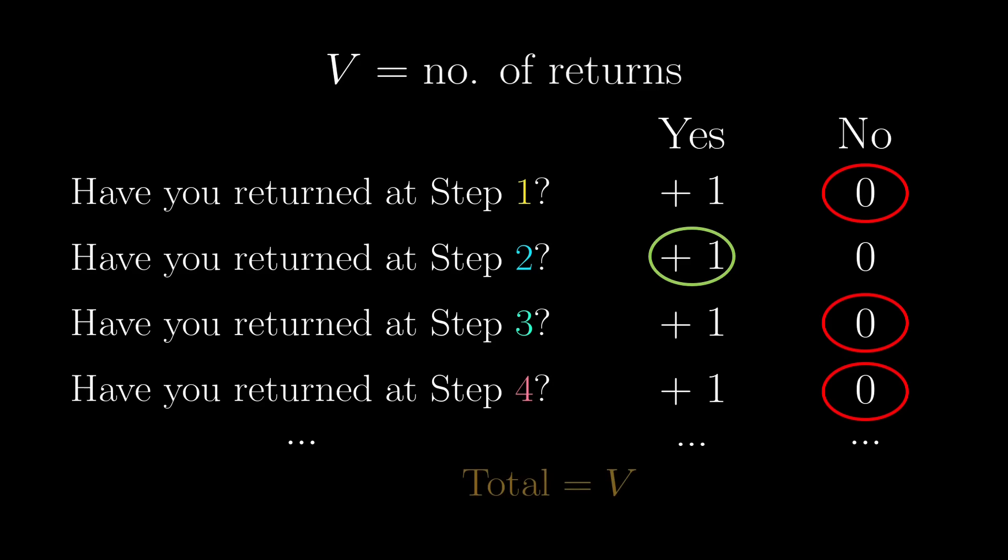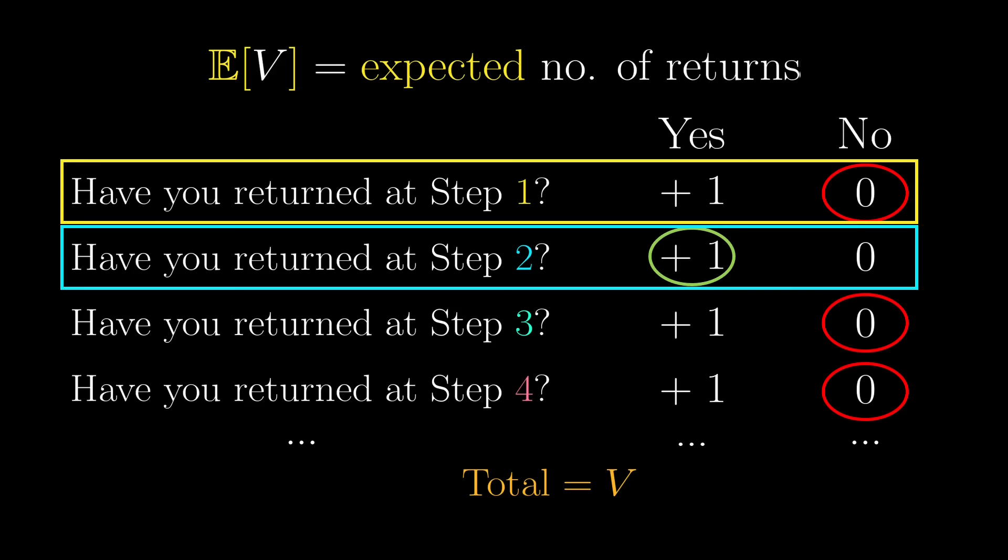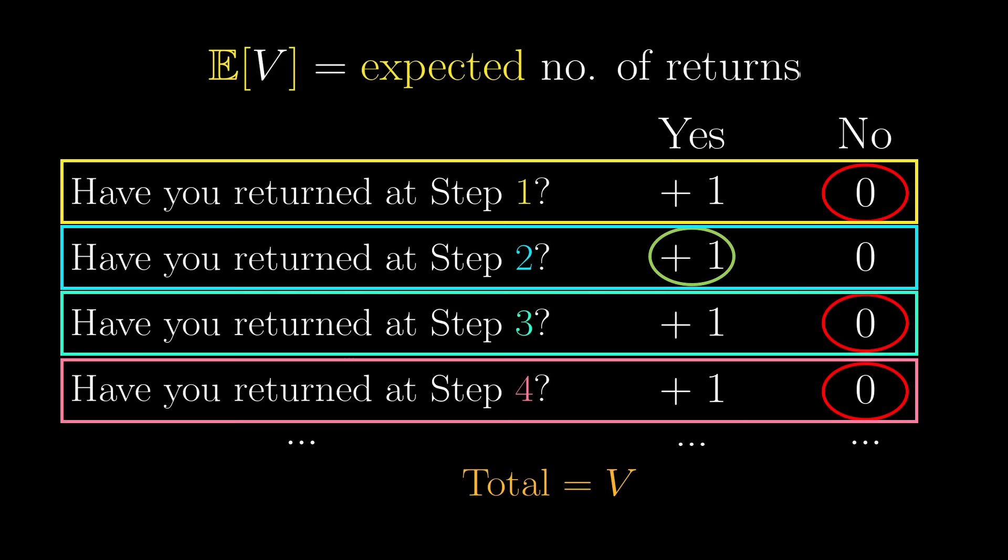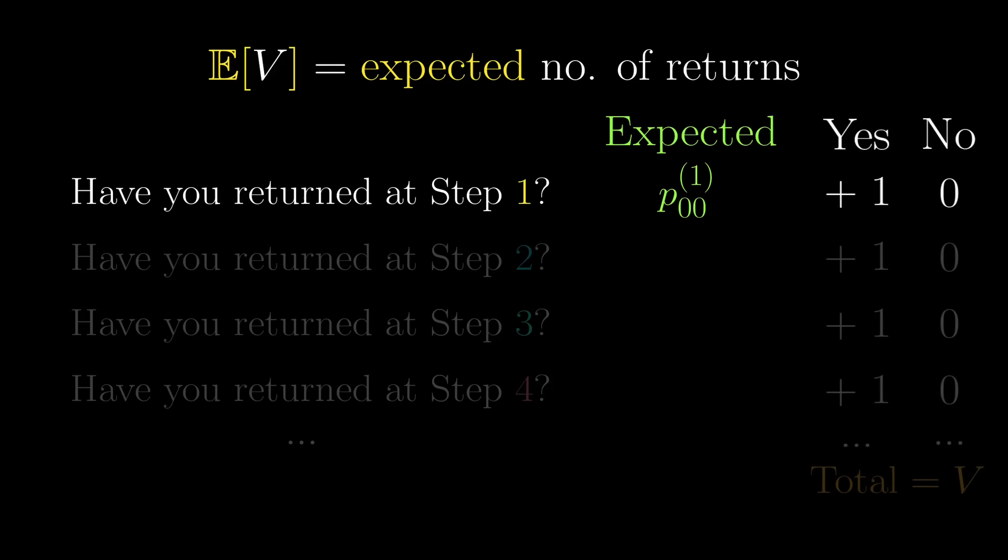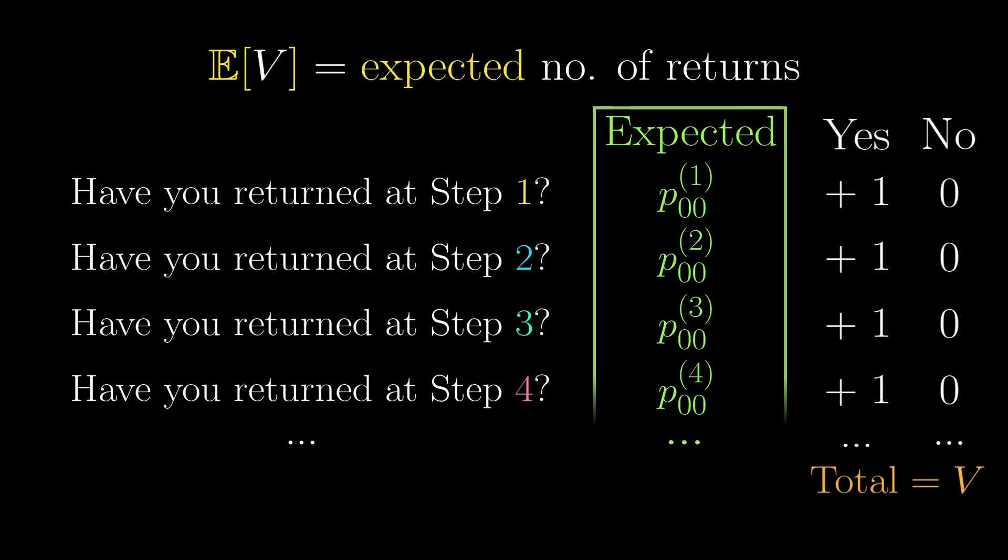If we are asking for the expected value of V, we add up the expected value of the first question, the expected value of the second question, and so on. The expected value of these yes-no questions are much easier to handle. The expected value of this question would be, by definition, 1 times the probability that you answer yes, plus 0 times that you answer no. Well, that's just the probability that you answer yes. We usually denote this probability as p with subscript 0 0 and superscript 1. The double 0 denotes going from the origin to the origin, i.e. revisiting the origin. And the superscript just represents at which step you revisit.